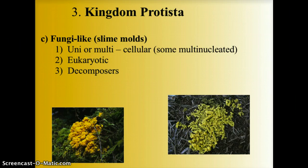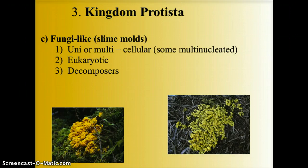The fungi-like protista — which include slime molds — can be either unicellular or multicellular. Some are multinucleated, meaning a single cell contains many nuclei. They are eukaryotic and are typically decomposers, feeding on dead, dying, or decaying matter. They usually represent the detritus portion of the food chain.